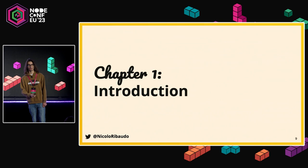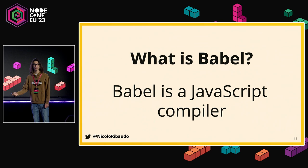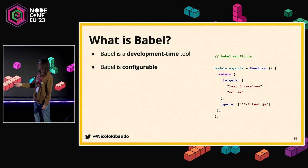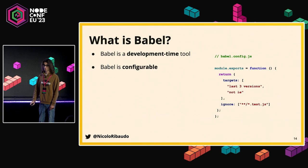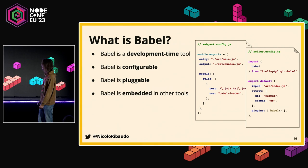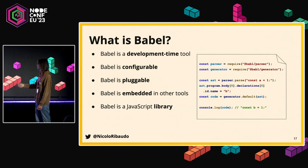Chapter one: Introduction. What is Babel? Usually all my talks about Babel start with 'Babel, a JavaScript compiler,' but that doesn't matter here. Babel is a development-time tool — you don't usually bundle Babel, you don't ship it to the browser, you just run it through some build process. It's configurable, so many users write a JavaScript file configuring how it works and at runtime Babel loads that file. It's pluggable, so we have to dynamically load plugins depending on what's defined in the config. It's usually embedded in other tools — people interact with it through Rollup or some meta framework. And finally, Babel is a JavaScript library with a JavaScript API. All of these characteristics affected how we migrated to ESM.